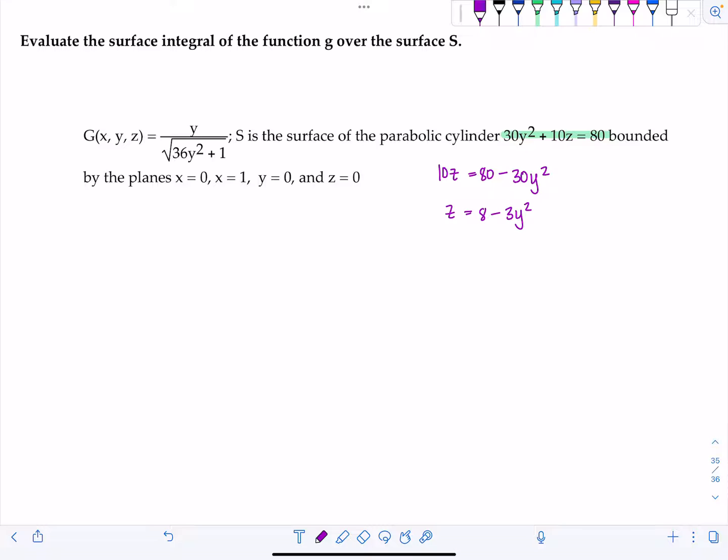So now I've written my surface as a function of y or x and y. And notice also g, this function, involves only y's, which is good. We don't want any z's in there if I'm going to integrate over the xy plane, which is what I'm leaning towards. Since I have my surface now basically as a function of x and y. So this is all making me lean towards the fact that we're going to integrate over the xy plane.